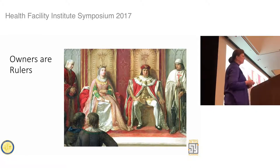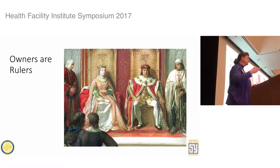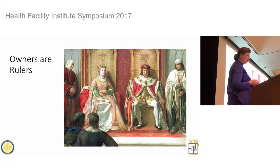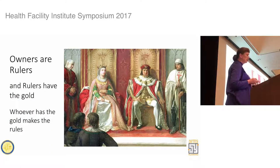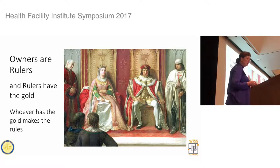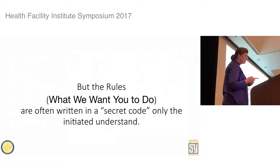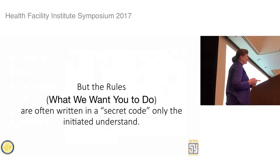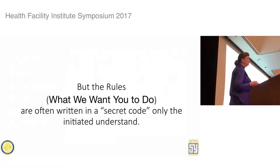I wanted to use a paradigm to talk about moving forward with SEPS to BIM and what we've tried to do this last year. The paradigm is: owners are rulers. We have the right to tell people what we want them to do. Whoever has the gold makes the rules, so we have a real responsibility to communicate well to those we're trying to get to help us. If we don't declare things in a way that can be understood, essentially it's irrelevant — we don't get what we want. But often we write them in some sort of secret code that you have to be initiated to understand.